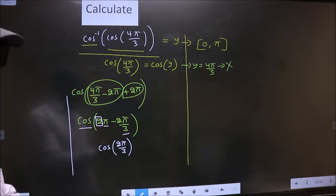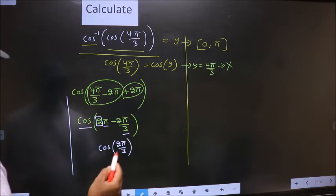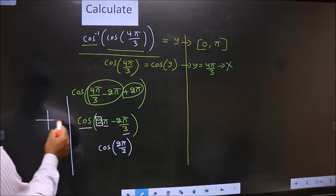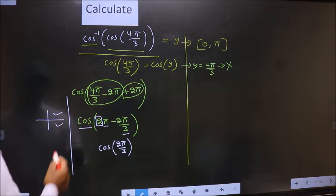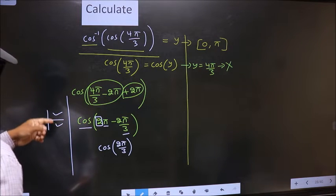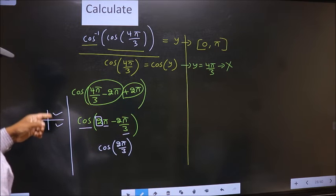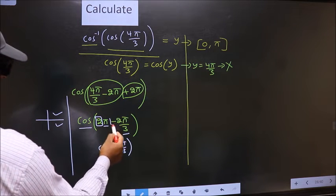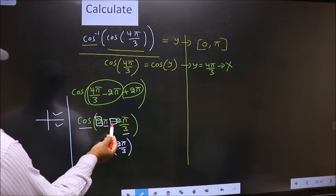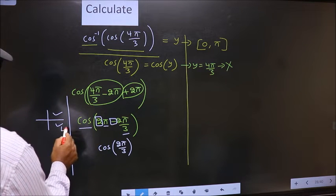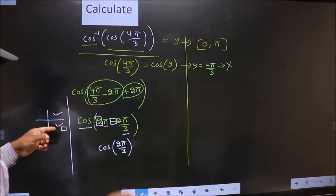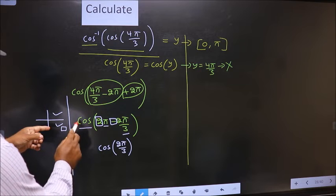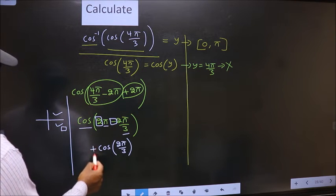And all the even multiples of pi they lie either in the first or in the fourth quadrant. So now to select the quadrant we should look at this symbol. Here we have negative that means angle lies in the fourth. And in the fourth quadrant cos is positive. So put plus.